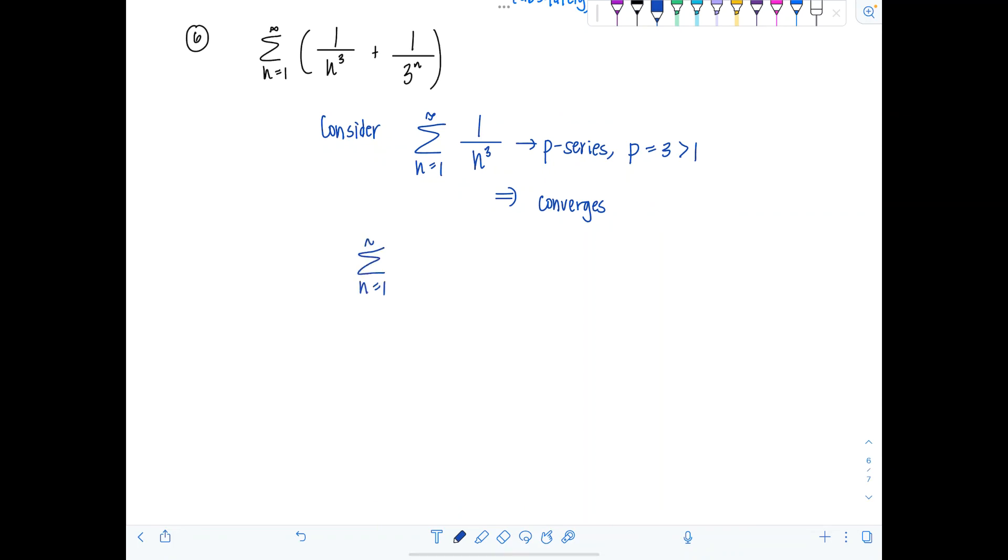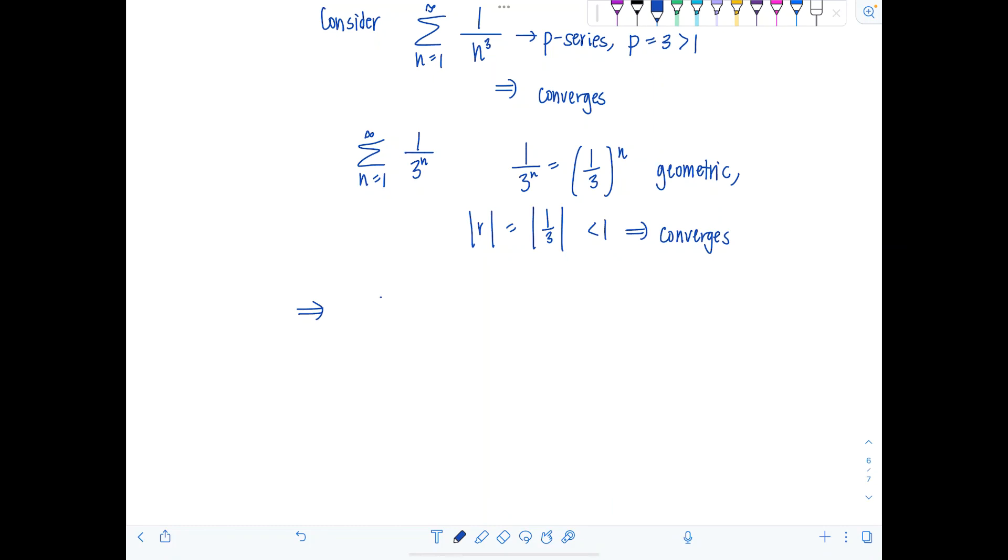What about that second term? So if I just consider the sum n equals 1 to infinity of 1 over 3 to the n. You guys, 1 over 3 to the n is the same as 1 third to the n. That's geometric. How fabulous. So that means r, absolute value of r is absolute value of 1 third. That's less than 1. So it converges also. And now I am able to sum these two terms together and state the following. So now I can say that means the sum n equals 1 to infinity of 1 over n cubed plus 1 over 3 to the n converges also, because the sum of two convergent series is convergent.